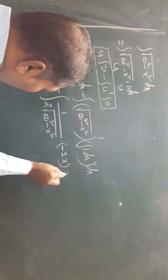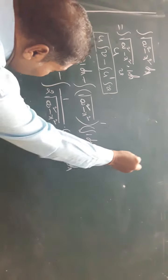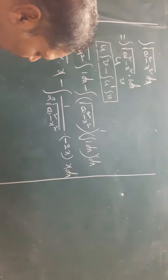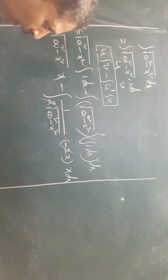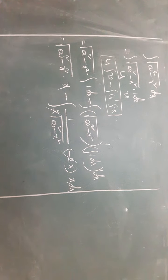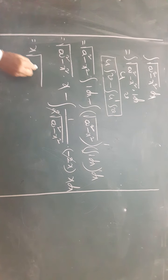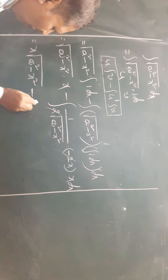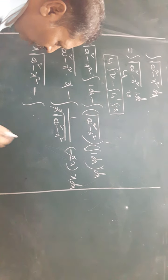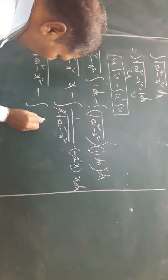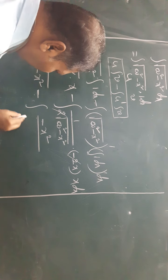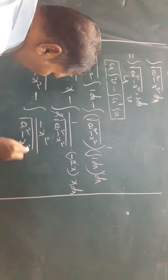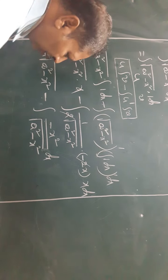The integral of 1 is x. So after substitution we get: x·√(a² - x²) minus the integral of (x · x) / √(a² - x²) dx, which is x·√(a² - x²) minus ∫x²/√(a² - x²) dx.